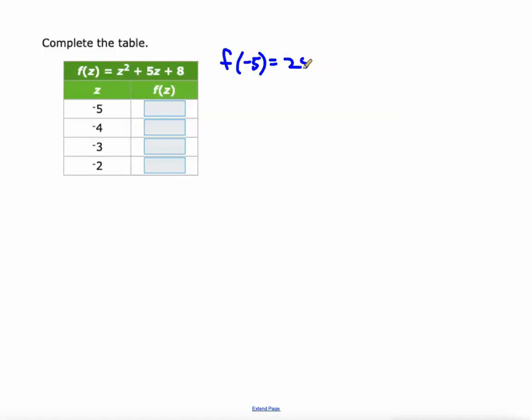All right. Negative 5 squared, that's 25. 5 times z, which is 5 times negative 5, that's gonna be negative 25, plus the 8. So our result is 8.